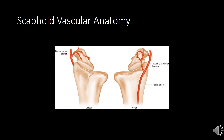Scaphoid vascular anatomy is very essential to consider when treating a fracture. As seen in this image, there is a dorsal carpal or superficial palmar branch of the radial artery that travels from distal to proximal. Essentially, the blood vessel goes over the scaphoid to the very end of it and then flows retrograde, or backwards. Therefore, fractures at the end of the bone have a higher healing rate versus fractures at the proximal pole.